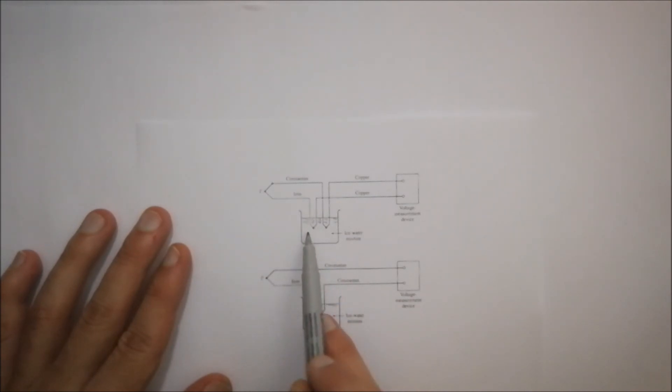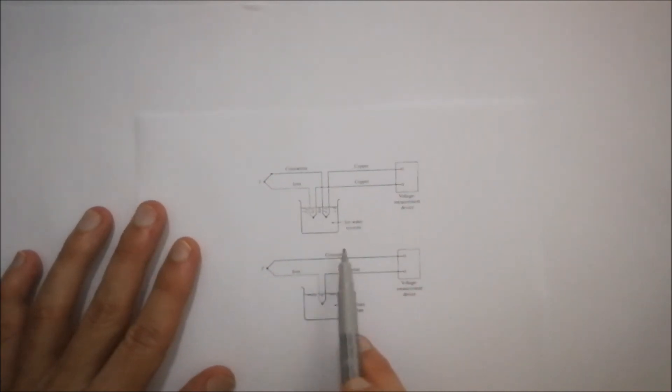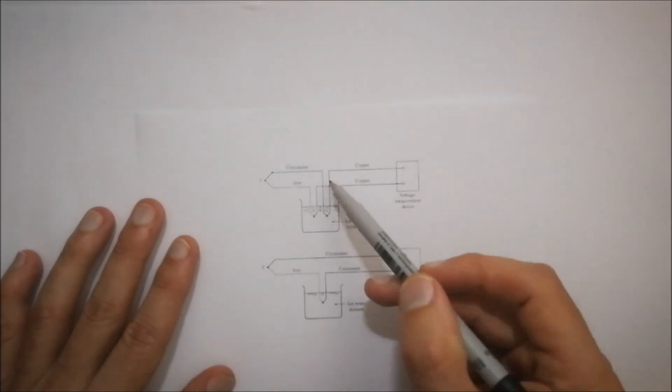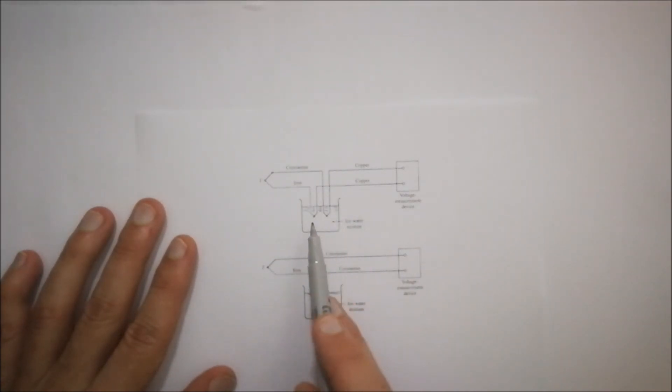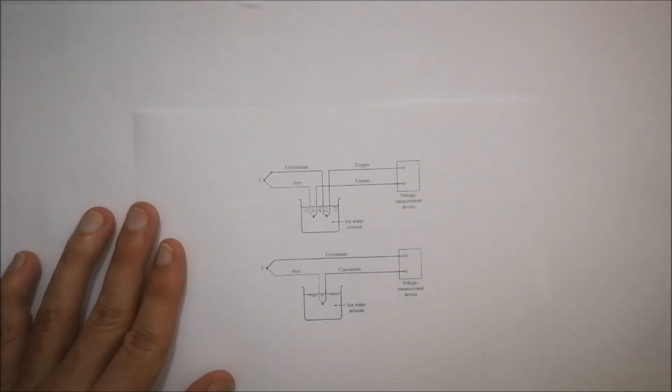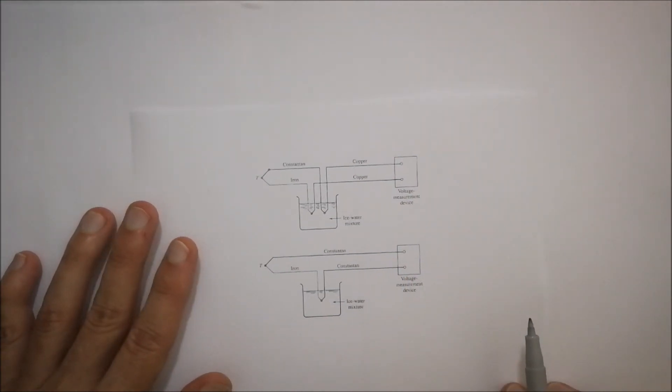That Constantin material comes down, also gets joined into the ice water. And then you've got copper wires joined over there in the ice water mixture that goes out to measure your voltage for your device. So this is where you would measure the voltage using a multimeter or an analog-to-digital converter.